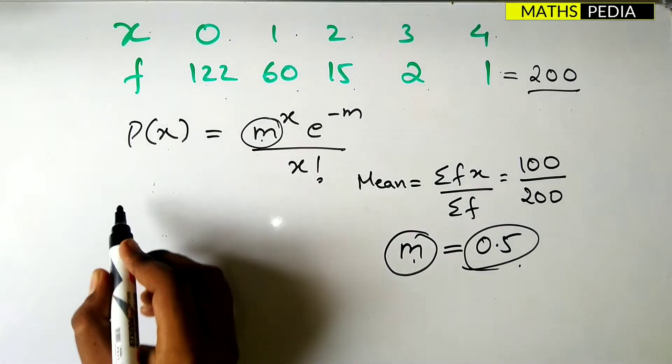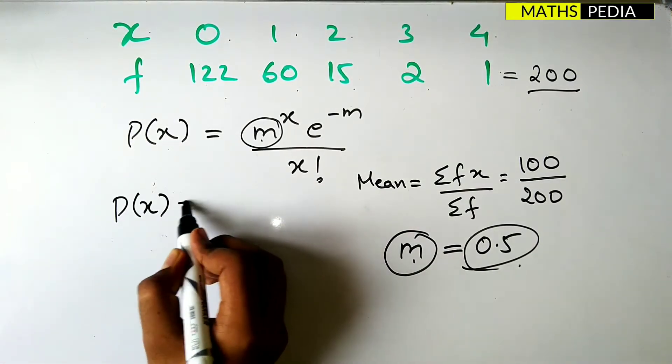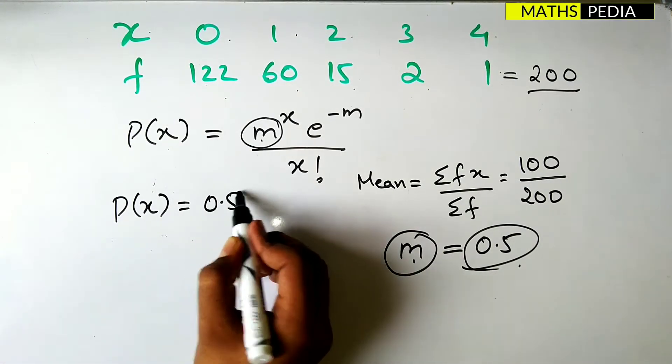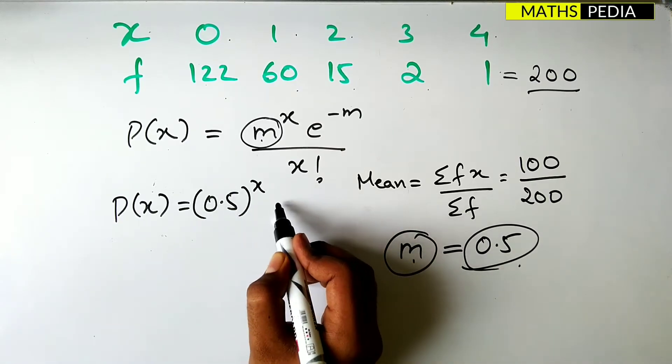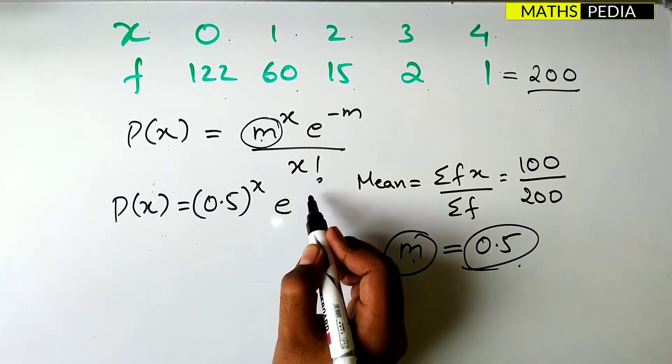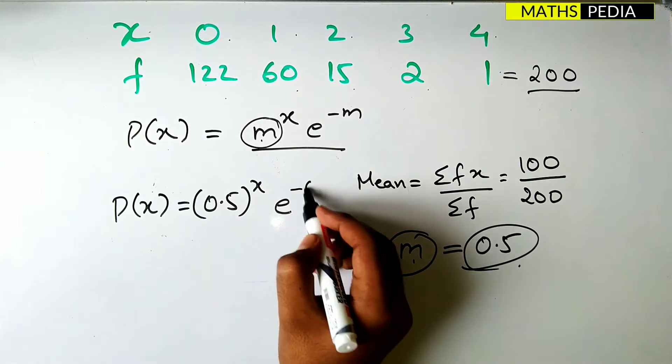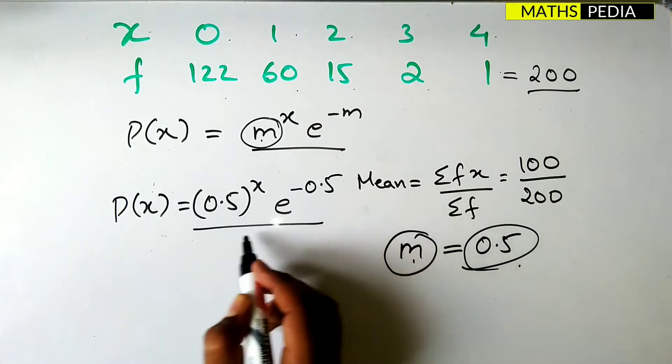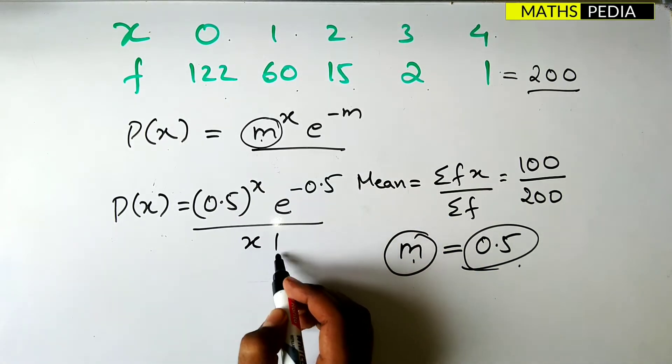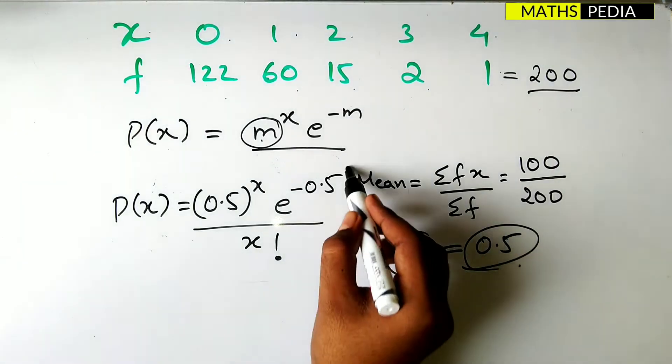So we have to just substitute the m value here and form the equation. So p of x is equal to 0.5 power x into e power minus 0.5 by x factorial. So this is the equation.